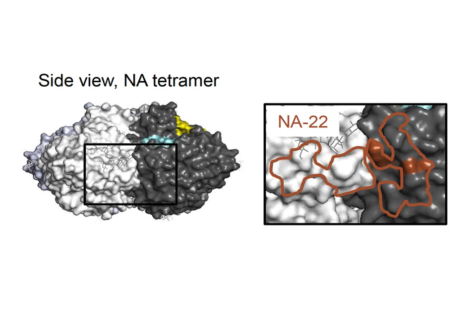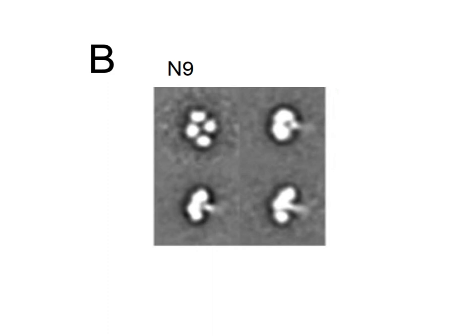There's a fifth antibody that's interesting. For this one, we need a side view of the tetramer. On the right, you can see the footprint from crystallography and the residues from proteomics. This antibody spans two protomers — it's a quaternary epitope that's on the side of the tetramer.